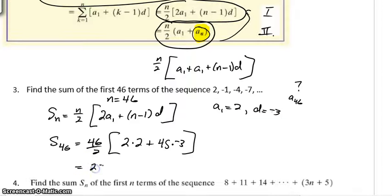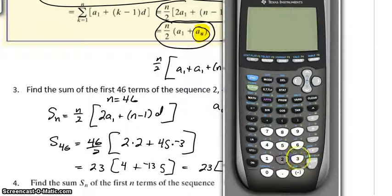And, guys, the rest of this problem, you just have to work all that out. 46 divided by 2 is 23. This is a 4. And, my gosh, I believe this is negative 135, if I'm not mistaken. Negative 3 times 45. I think that's right. I add a 4 and you'd get negative 131. And, hey, with the calculator, that's no big deal. 23 times negative 131. And, you get negative 3,013.